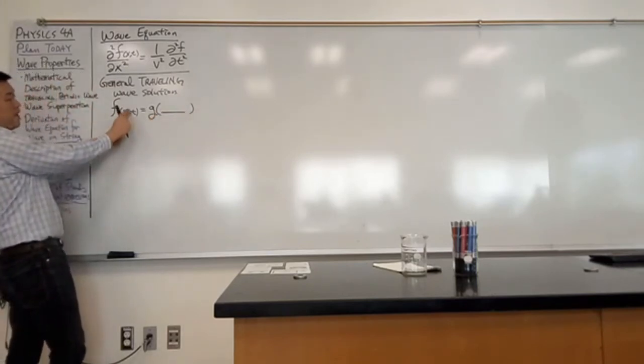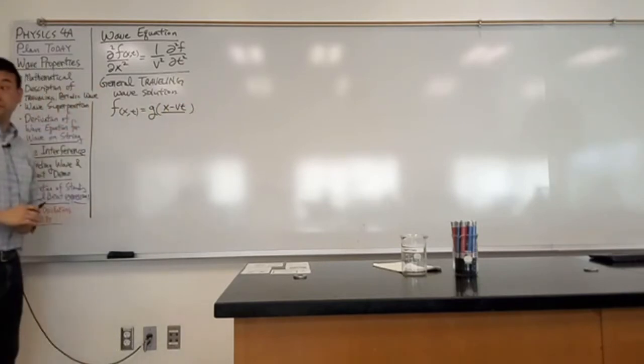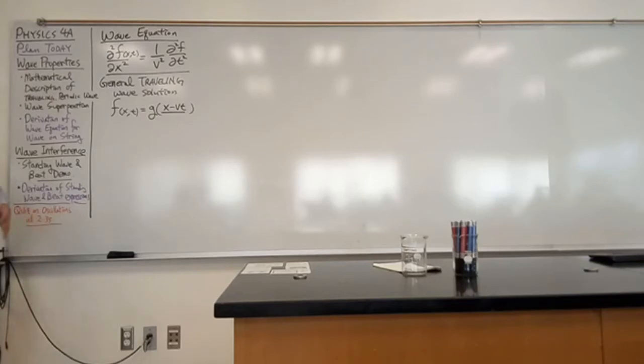Where the single variable is combination of x and t this way, x minus vt. Right? So this is where we ended with the last time.